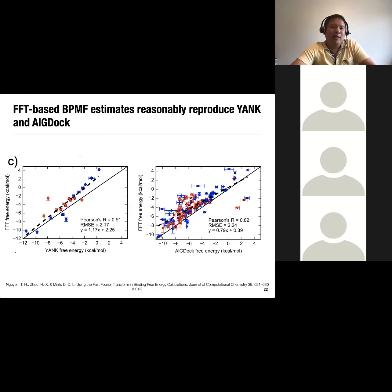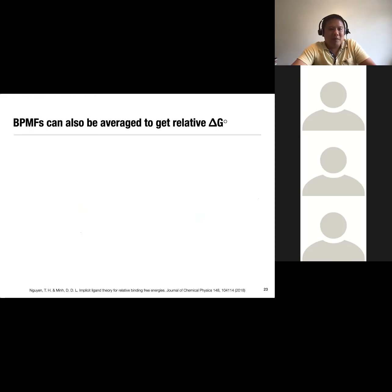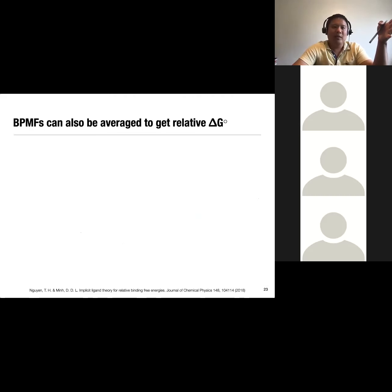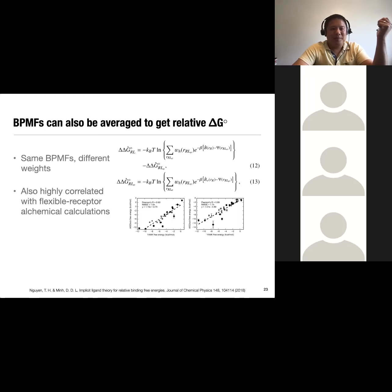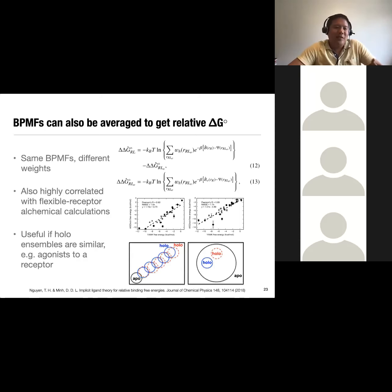Using this FFT-based approach, we can reasonably reproduce the Yank results, as shown on the left panel, and in the right panel the correlation with AlGaDock covers all 141 systems. We're building on this for protein–protein interactions. You can also get relative binding free energies using the same binding potential of mean force data — you just weight the snapshots differently: instead of using weights from the APO ensemble, you use weights from the holo ensemble for a specific ligand. There are different ways to use the same data to estimate free energy differences, and this could be very helpful when many holo ensembles are similar to each other but differ from the APO ensemble.